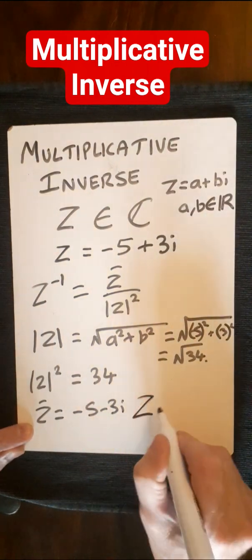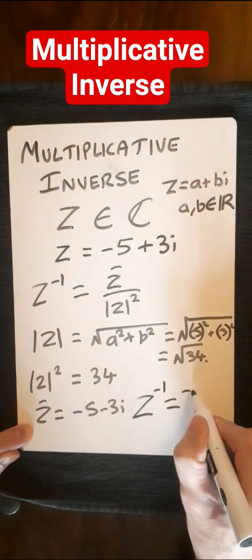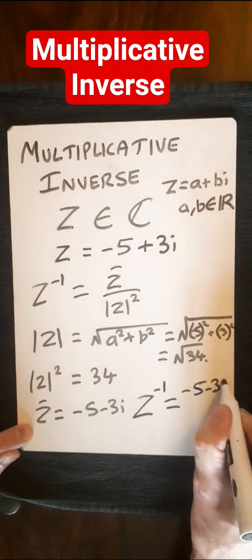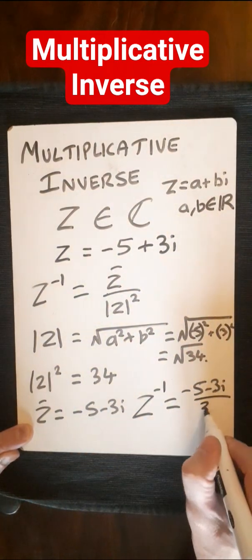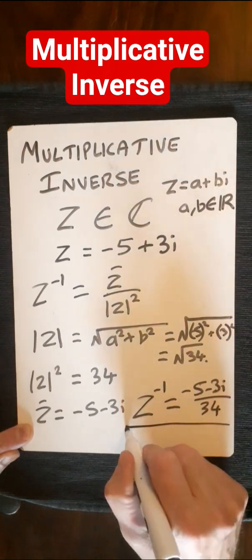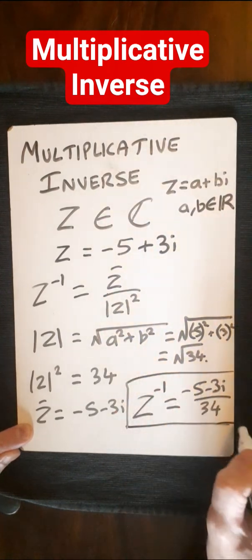So then with all these building blocks in place, conjugate of z is minus 5 minus 3i, and then 34 in our denominator. And that's our multiplicative inverse done.